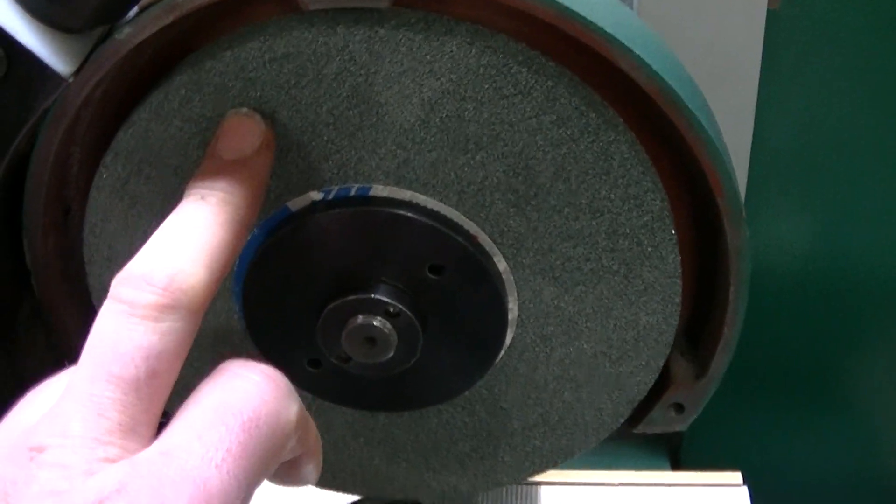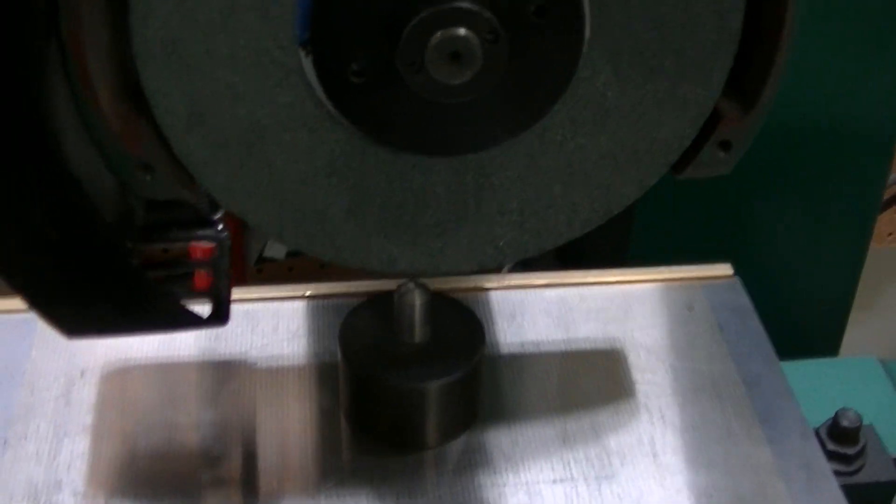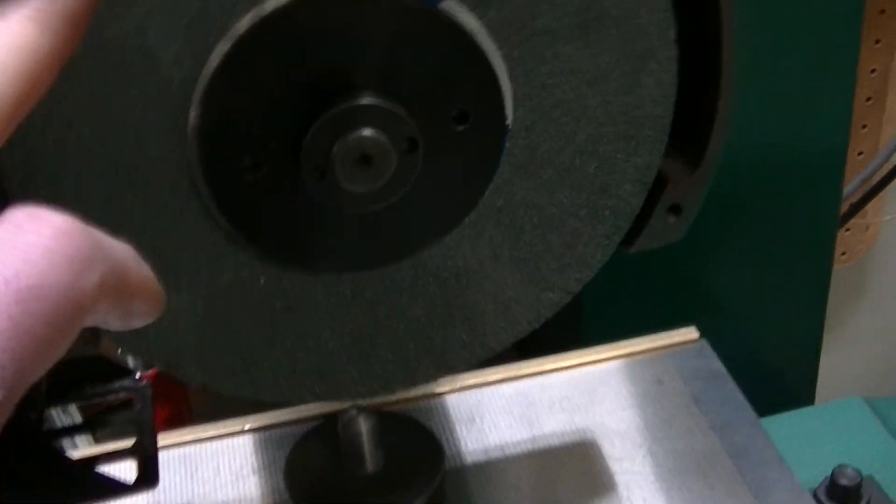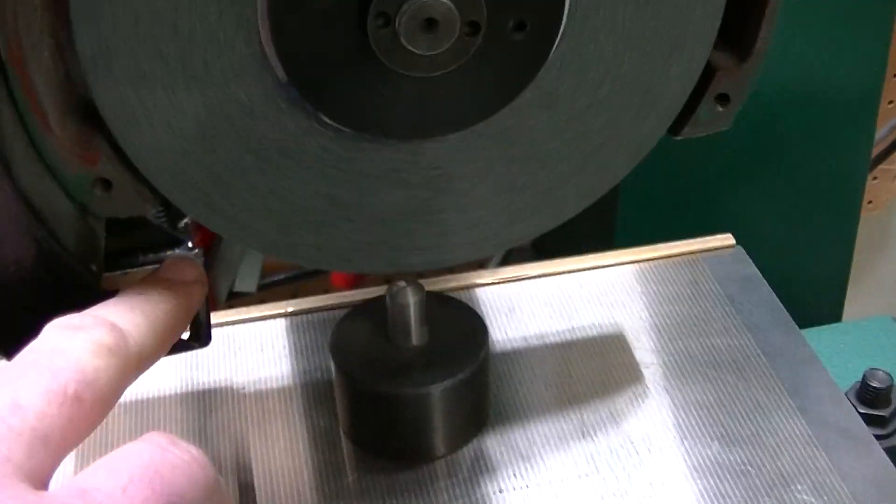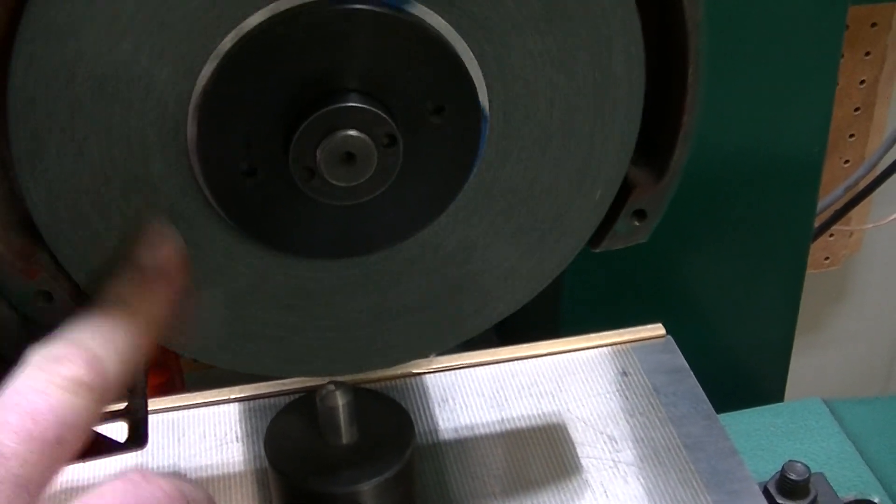The first step that you've got to go through is you need to true the wheel up, because from the factory they do not come round. I can demonstrate this here. Let me put the camera on the tripod and I'll show you what I mean.